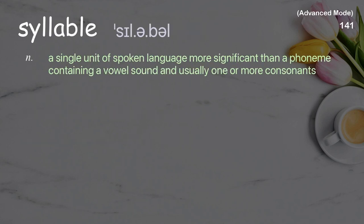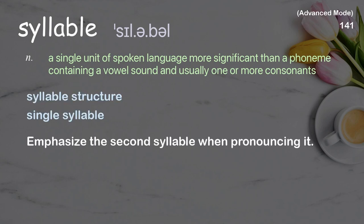Syllable: a single unit of spoken language more significant than a phoneme, containing a vowel sound and usually one or more consonants. Examples: syllable structure, single syllable. Emphasize the second syllable when pronouncing it.